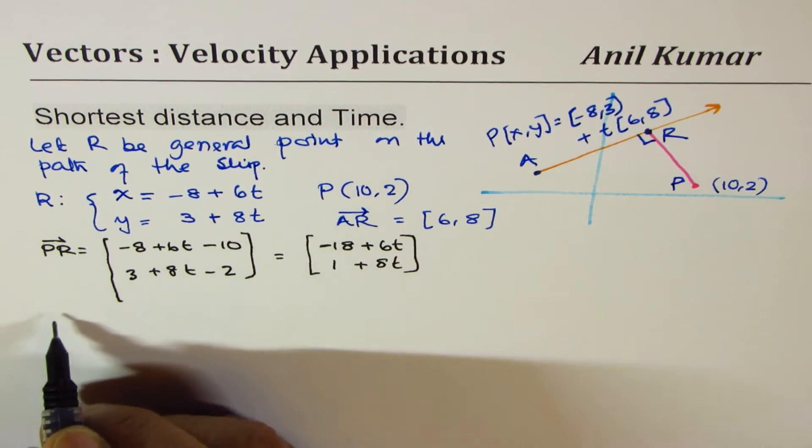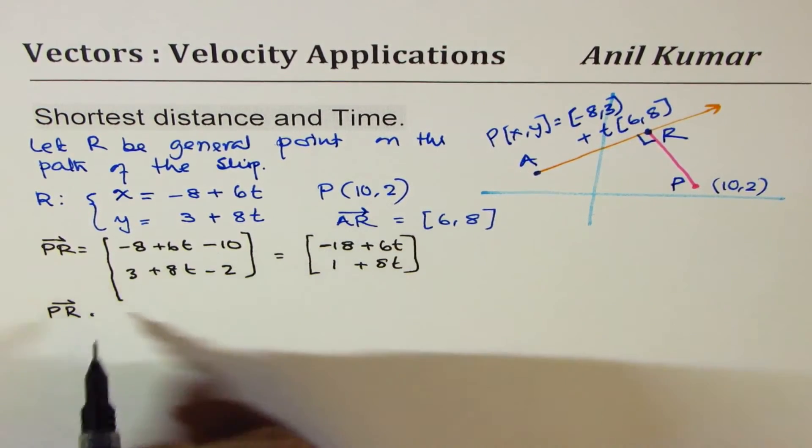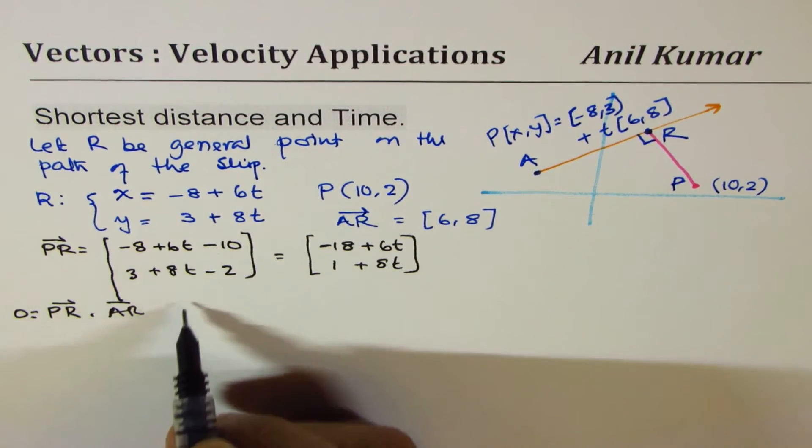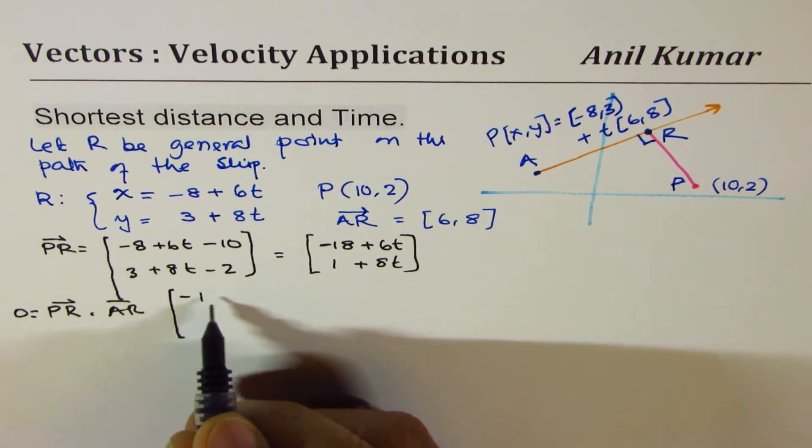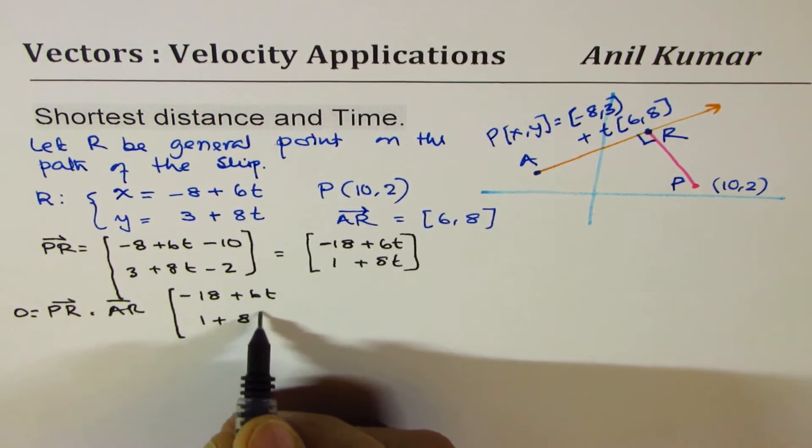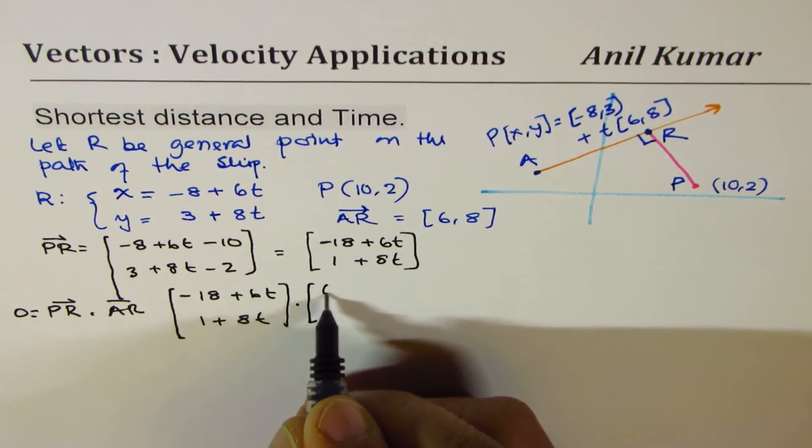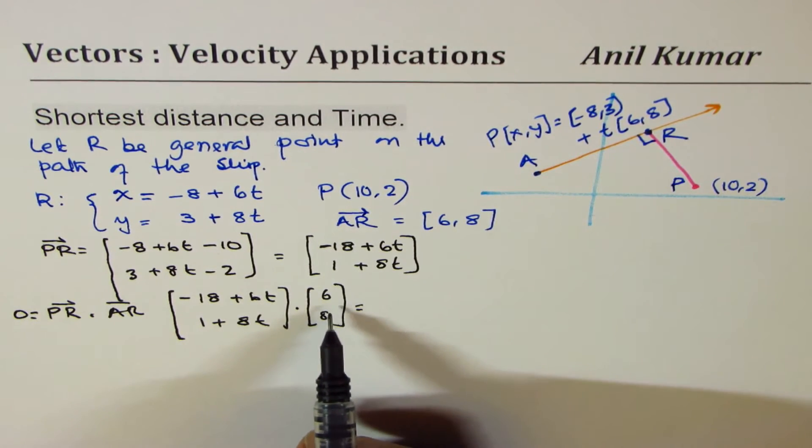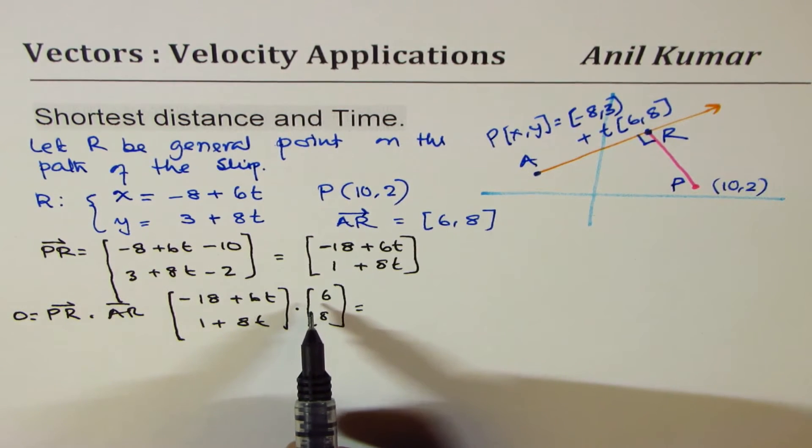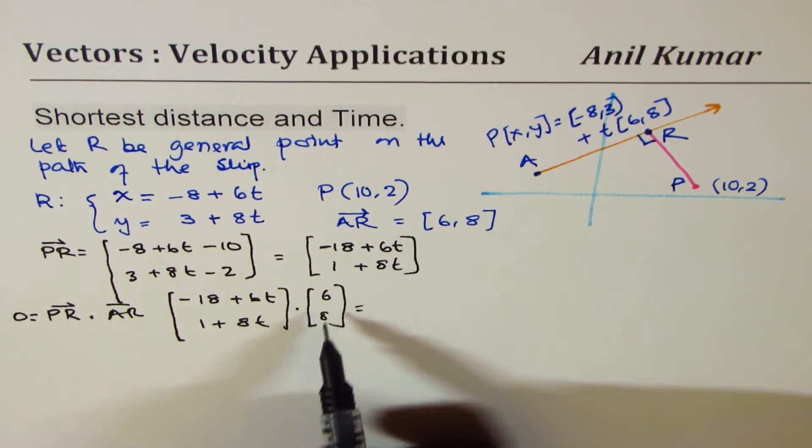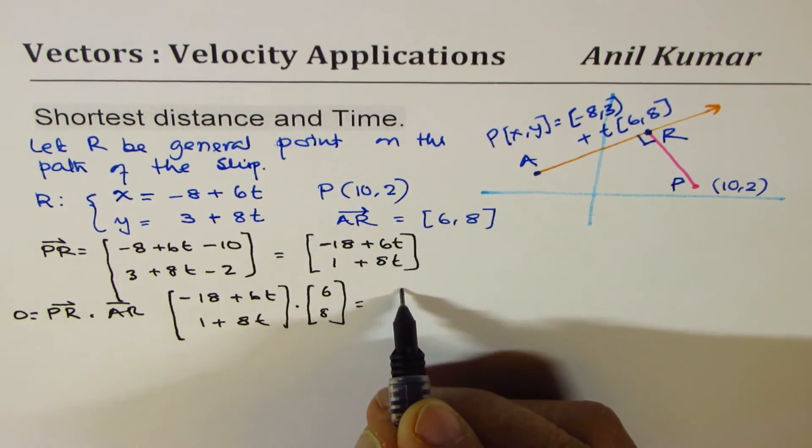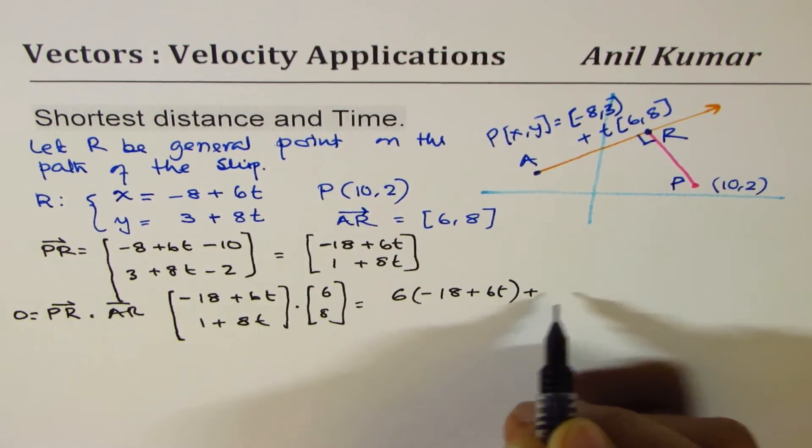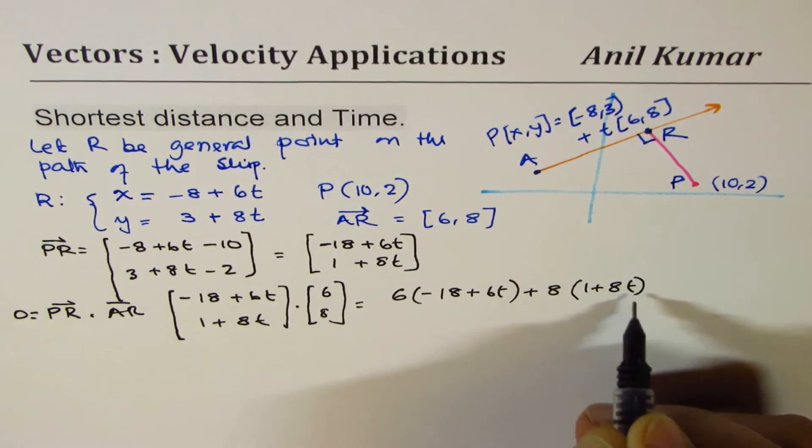So that is PR, which is, this becomes -18 + 6T. And this is 1 + 8T. Now, the dot product, when it is right, then that means the dot product PR to AR should be equal to 0. So I should say 0 equals to this. So let's find the dot product. So the dot product here is (-18 + 6T, 1 + 8T) dot (6, 8). So we can multiply this by 6 and then do the needful.